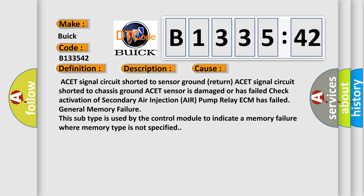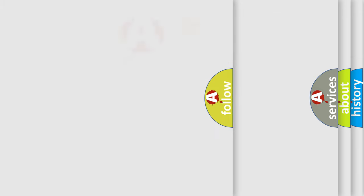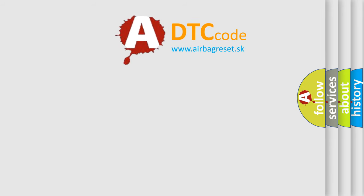ACET signal circuit shorted to sensor ground return, ACET signal circuit shorted to chassis ground, ACET sensor is damaged or has failed, check activation of secondary air injection air pump relay, ECM has failed, general memory failure. This subtype is used by the control module to indicate a memory failure where memory type is not specified.